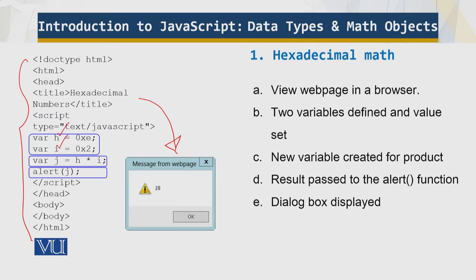Now, remember that these two are hexadecimal. These are hex numbers and this is 14 in decimal and this is two in decimal. So how do we go about? We create a new variable. This is the new variable.